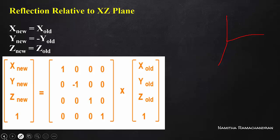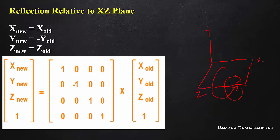Let's consider the coordinate axes x, y, and z. For the x-z plane reflection, if we reflect the top position it goes to the bottom, and if we reflect the bottom it goes to the top. We will not change x or z values. The y value becomes its opposite — y_new is minus y. In the matrix, the y row and y column position becomes minus 1, making y_new equal to minus y.